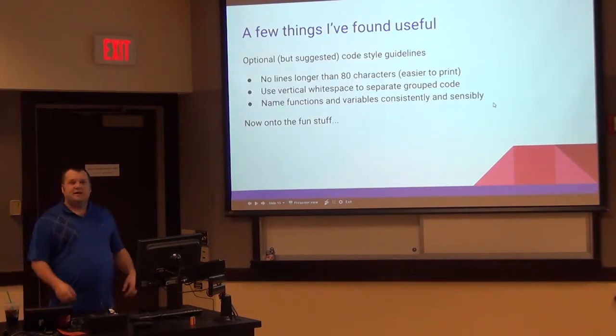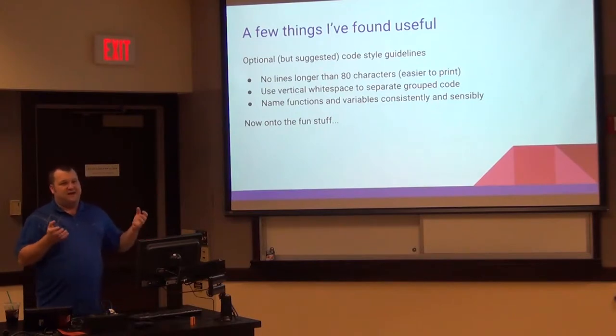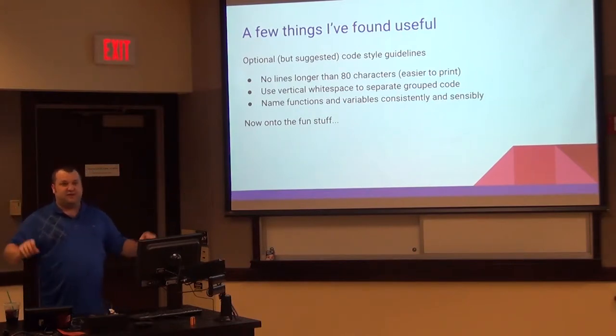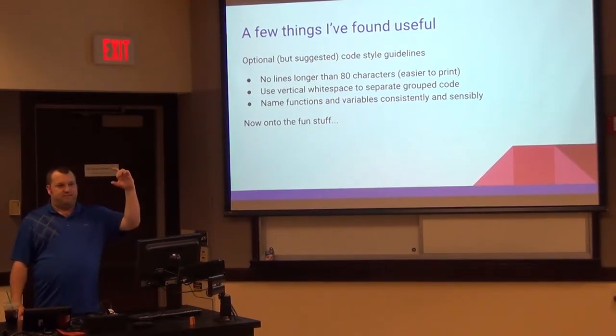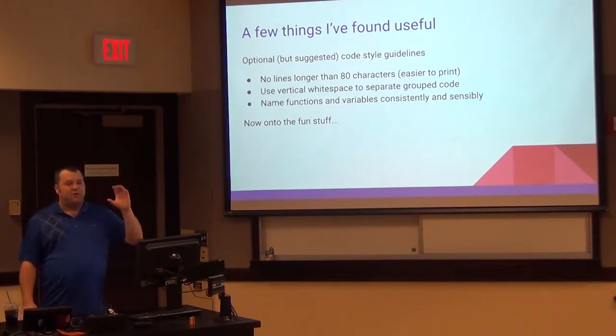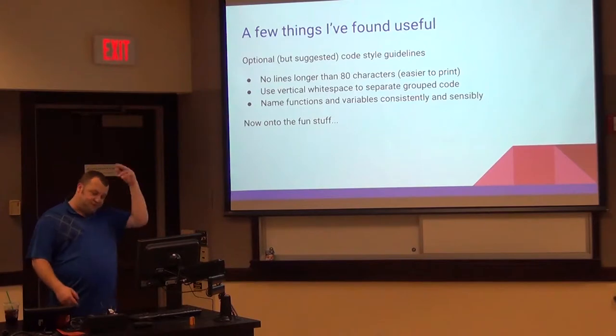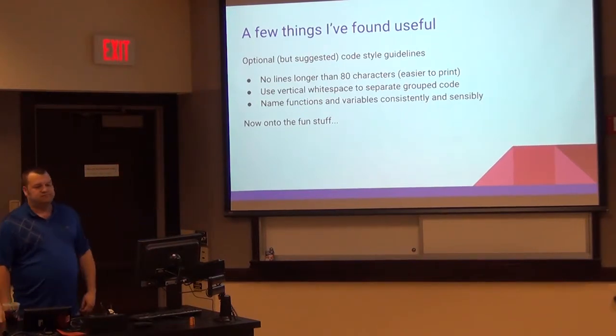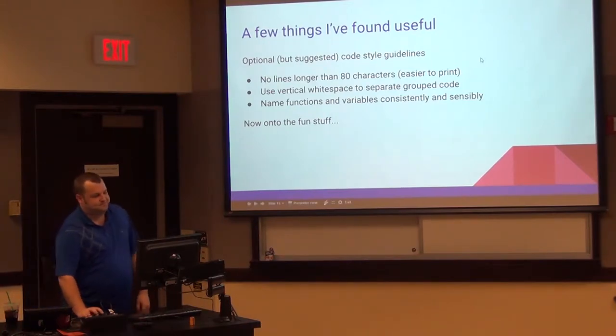A couple things I've found useful. Don't go over 80 characters a line. It's an archaic restriction from 80 by 25 terminals. But also, when you print things, Notepad and most text editors, 80 characters is what they end up getting on a page. Vertical white space is nice. You can separate logically grouped blocks of code. But vertical white space is your friend. We have big screens today. We can even turn them on end and extend our vertical space. And what we get there is logical grouping that is easy for the eye to see. Just name functions consistently and sensibly. They should be named what they do.